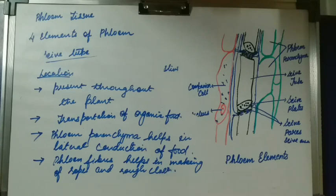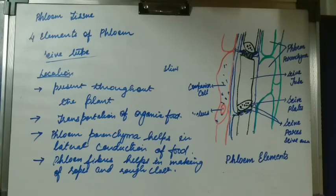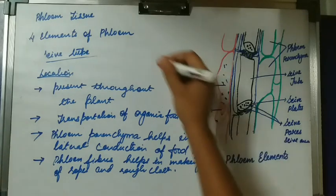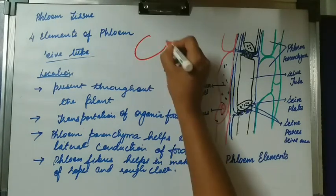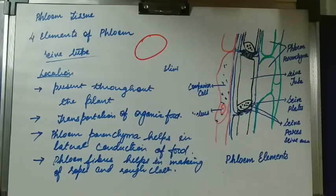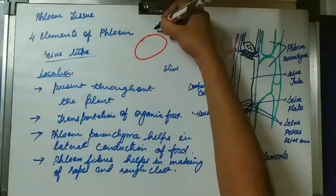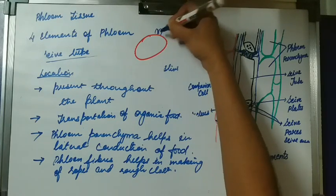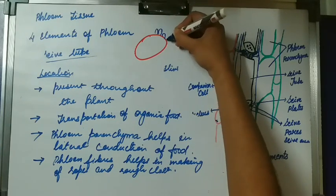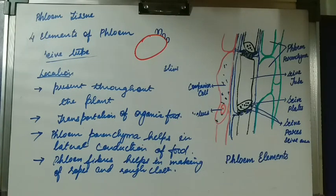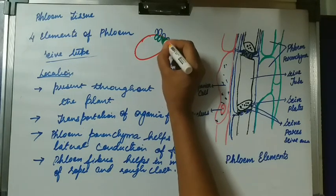Among xylem and phloem, phloem is present on the outer side as compared to xylem. Suppose this is the bark of a tree — phloem is present on the outer side, and xylem is present on the inner side.